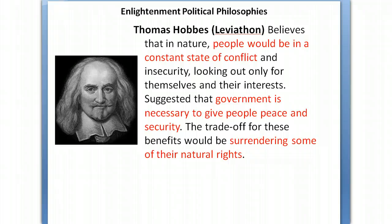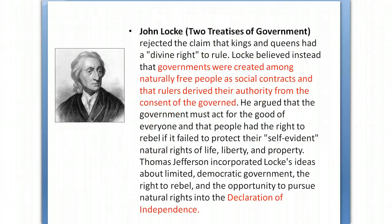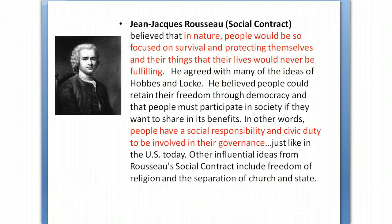The Enlightenment political theories include Thomas Hobbes, who believed that people are in a constant state of conflict, that government is necessary to give people peace and security, and that you have to surrender some of those rights to create order. John Locke takes it further, saying that governments are created among naturally free people as part of the social contract, and that rulers derive their authority from the consent of the governed — an idea used by Thomas Jefferson in the Declaration of Independence.